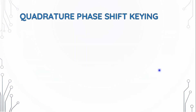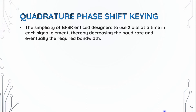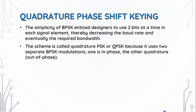Now we look at Quadrature Phase Shift Keying (QPSK). The simplicity of BPSK led designers to use two bits at a time in each signal element, thereby decreasing the baud rate and the required bandwidth. This scheme is called QPSK because it uses two separate BPSK modulators — one in-phase and one in quadrature.